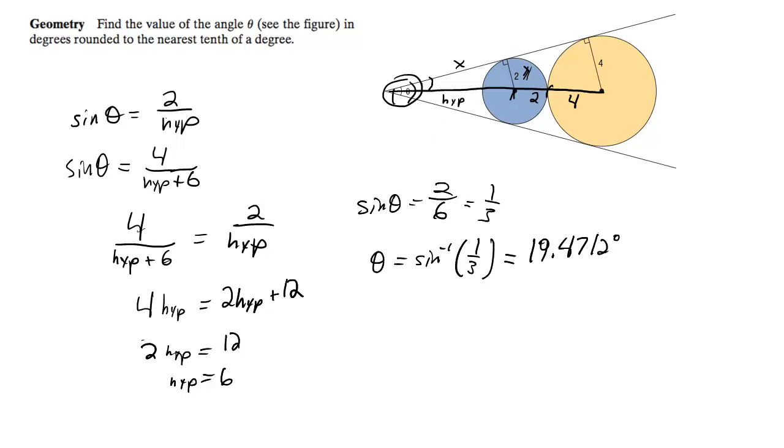That's just this half, even though I said theta, it's theta divided by 2, so it's this, but we've got to find the whole thing, so it's double that.